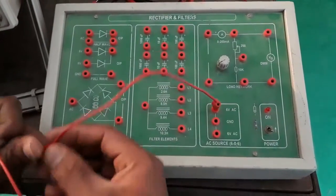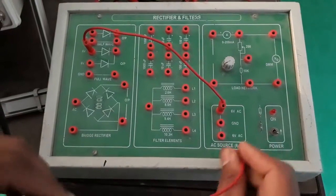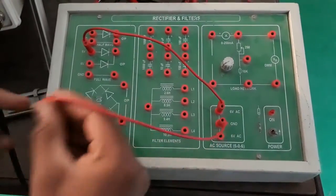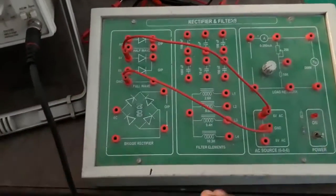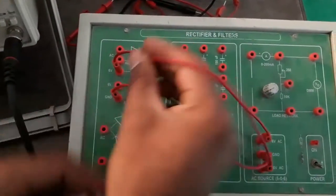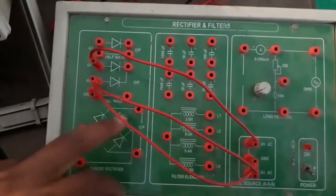Now I am applying 6 volts to the full wave rectifier and this is ground. You can look over here, this is ground and I'm applying to the ground. This is 6 volts I am applying. Now I will take the output over here.